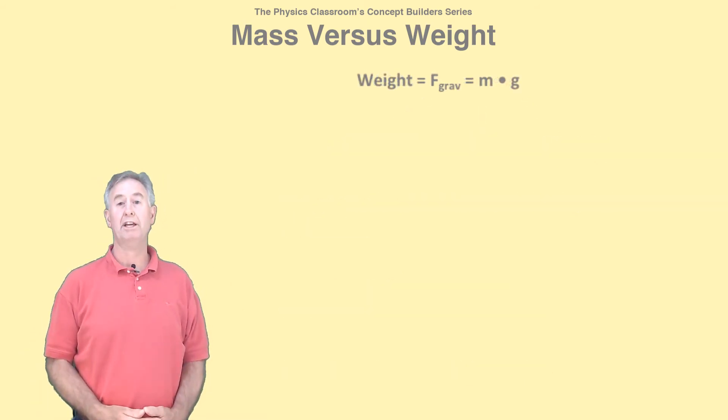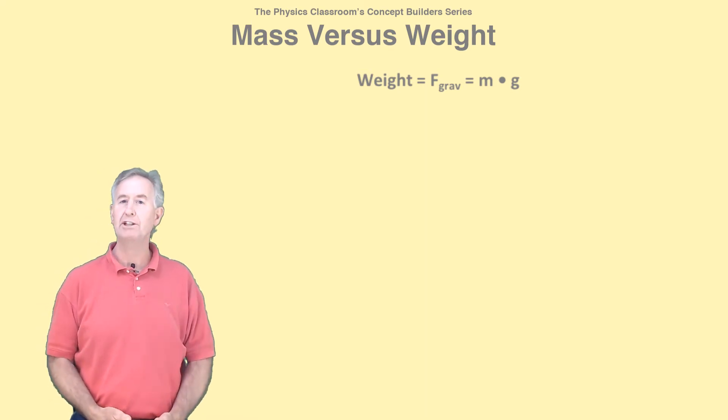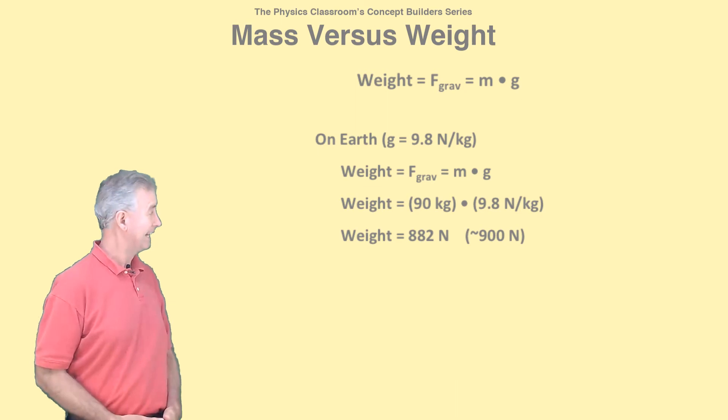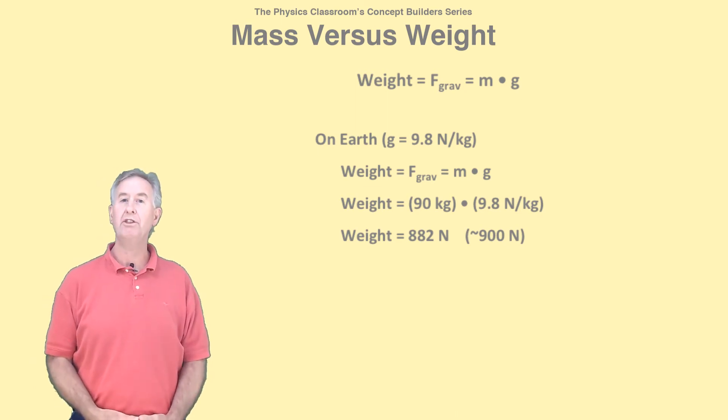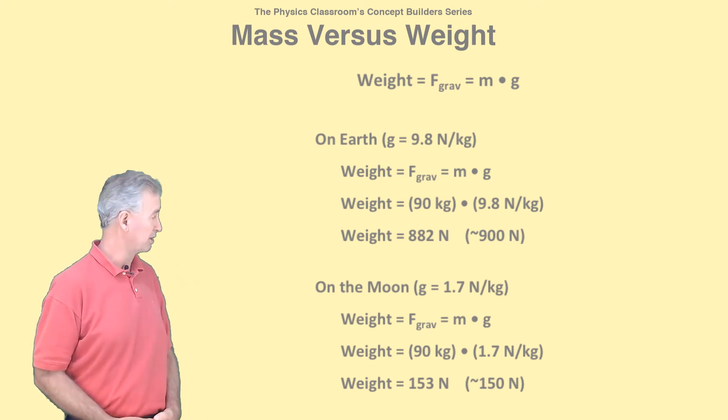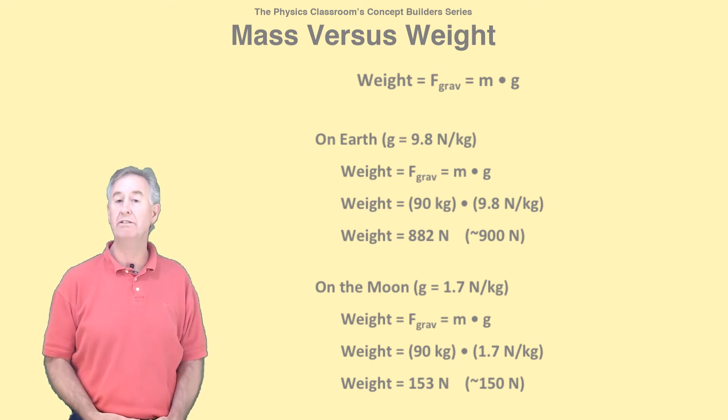The weight of an object can be calculated from the mass using this equation. As mentioned earlier, the weight of a 90 kilogram person on Earth is about 900 Newtons. To be exact, 882 Newtons. On the moon, where the value of g is 1.7 N per kg, the weight is approximately 150 Newtons. The difference in weight between Earth and moon is due to the value of g, not due to the mass.